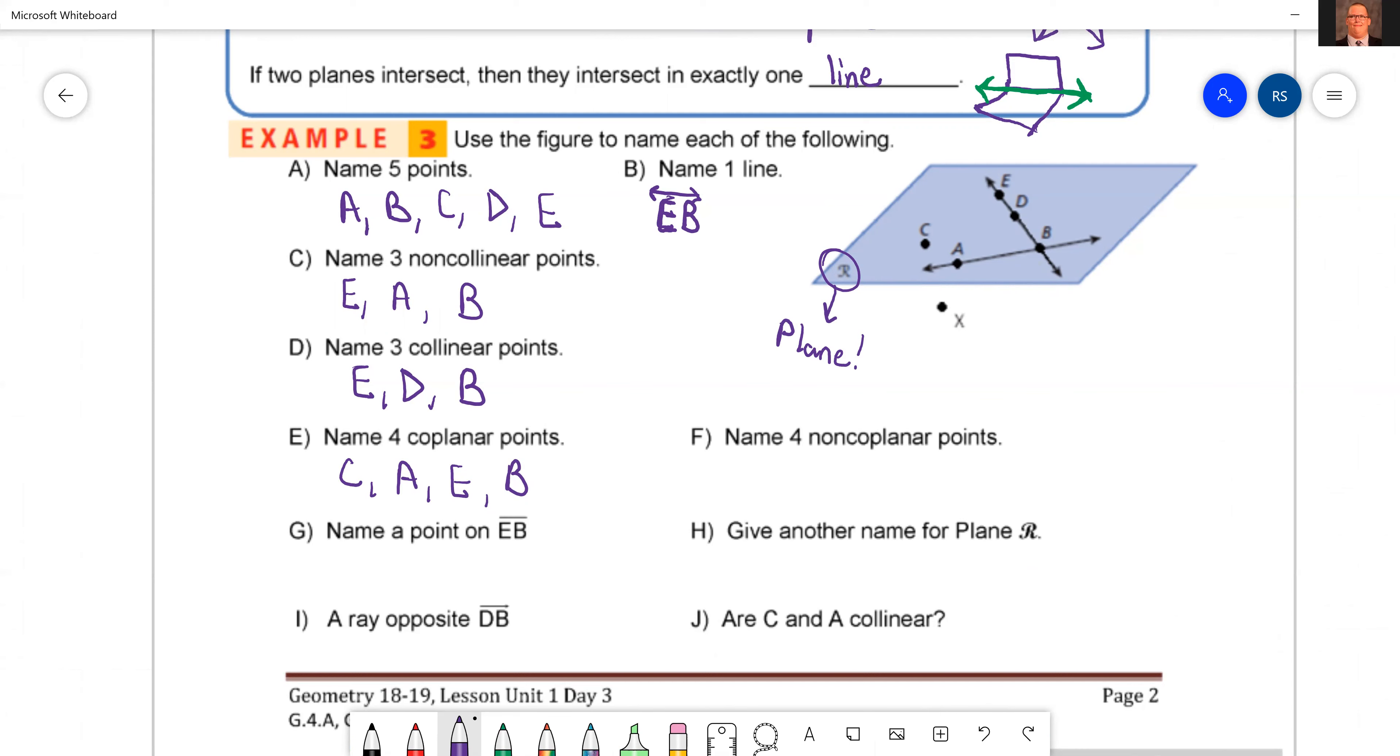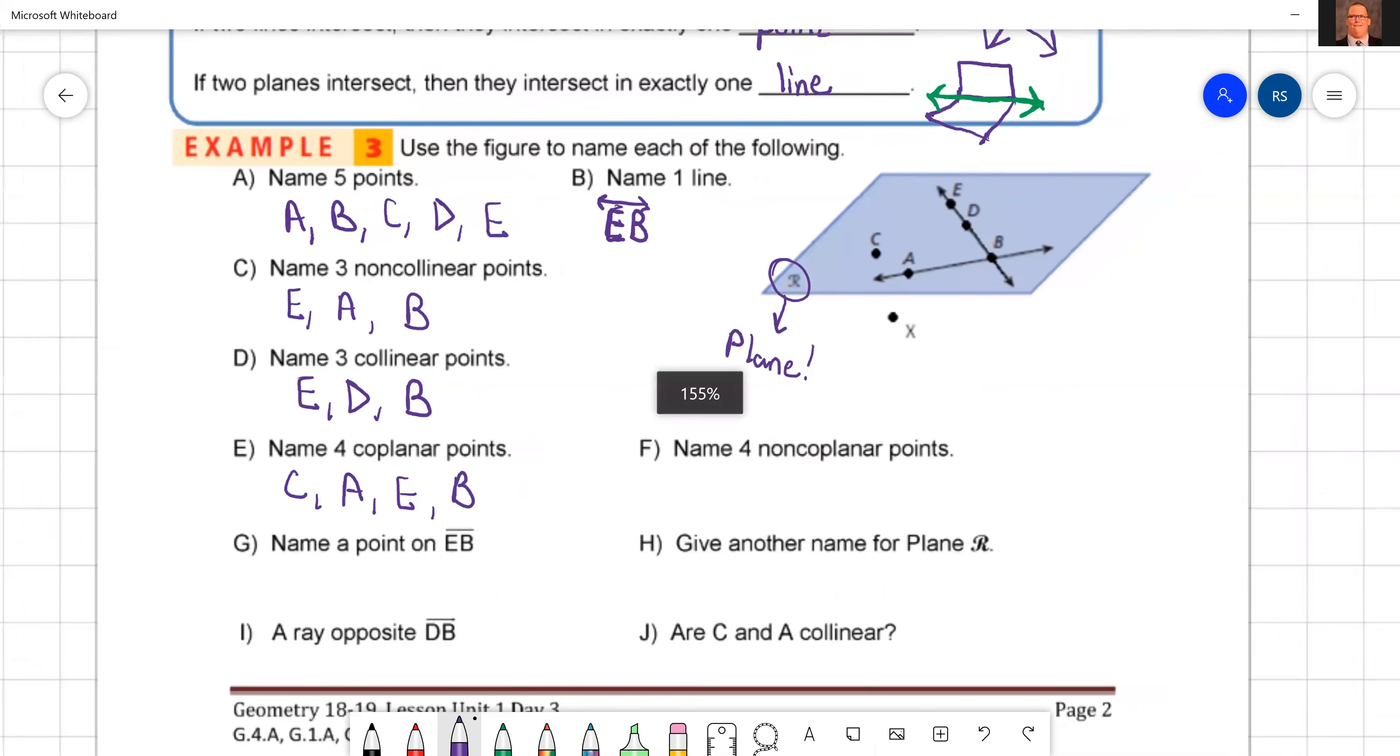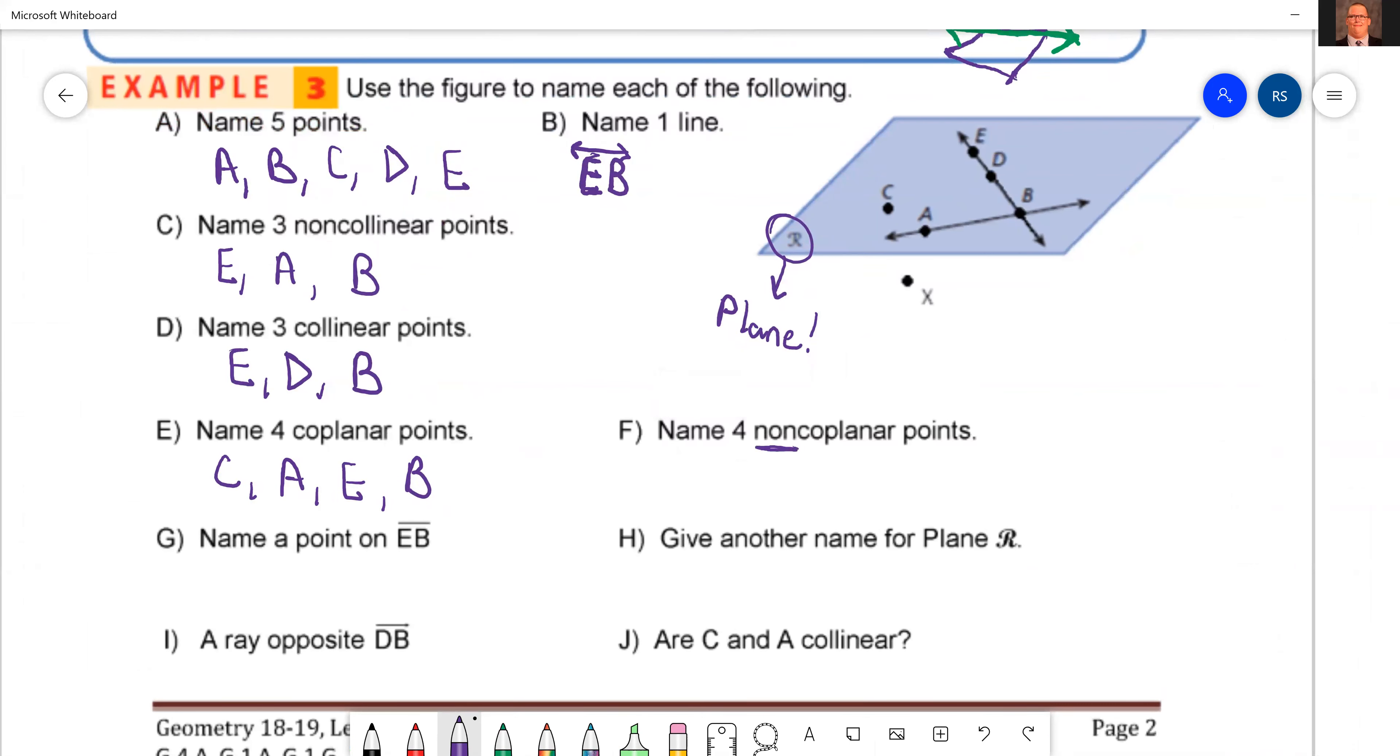Next one says name four non-coplanar. So I'm going to start with X just so I know I'll get it right, because X is the only point not on that plane. I'm going to say X and then pick any of my other three points. How about we all go to A, C, E. Okay, now it says name a point on segment EB. So we start at E and we go to B. What's a point on that segment? A point in between them. D, that's it.